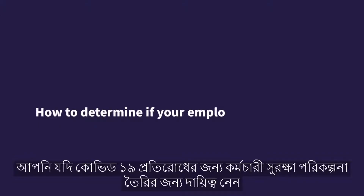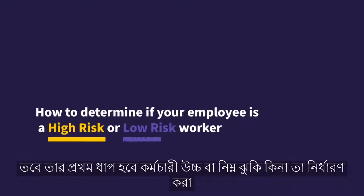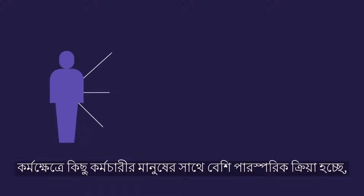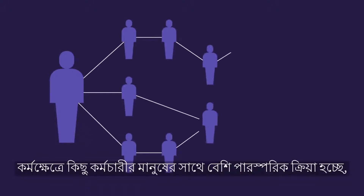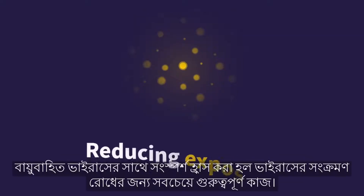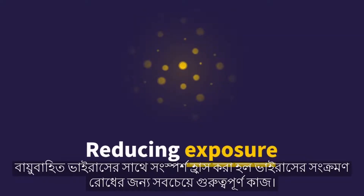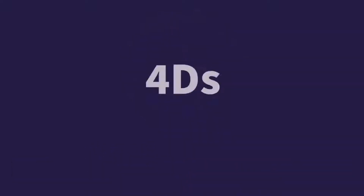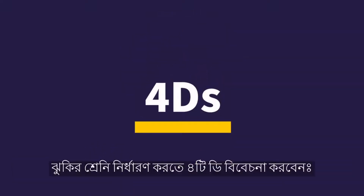If you are responsible for creating an employee protection plan to prevent getting COVID-19, the first step is to determine if the employee is high or low risk. Some employees are interacting with people more at work, making them more vulnerable to getting sick. Reducing exposure to an airborne virus is the most important thing you can do in reducing its spread. Consider the four D's to determine the risk category.